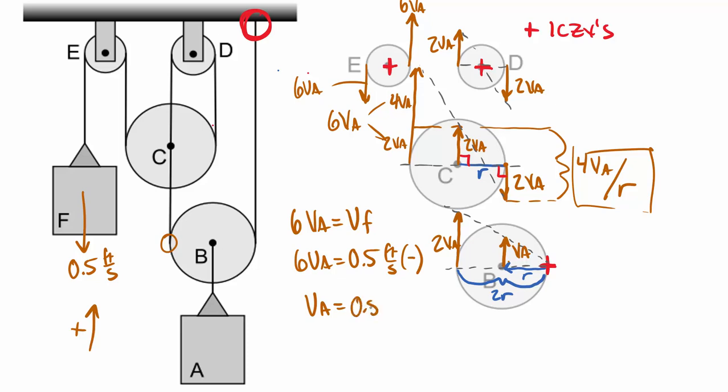So then I can find that VA is equal to 0.5 divided by 6. So 0.5 divided by 6. And that is going to equal the small velocity of 0.0833 feet per second. All right, so that would be my velocity of A. So there's a 6 to 1 ratio between the velocity of A and the velocity of F. Therefore, A will also travel 1/6 the distance that F will over here and also have 1/6 the acceleration of F.